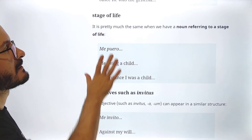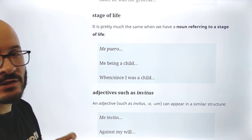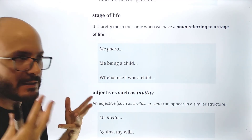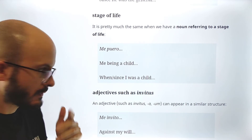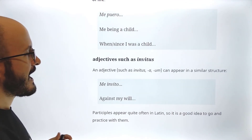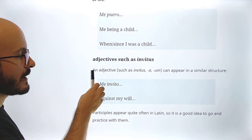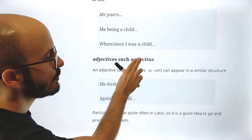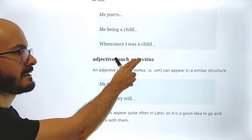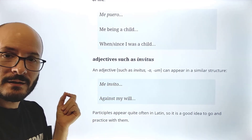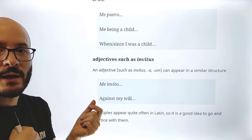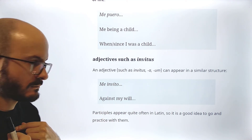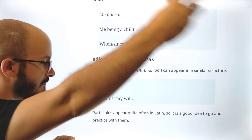We can also have something similar when there is a noun referring to a stage of life. For example, 'me puero' — 'me being a child,' that is 'when I was a child' or 'since I was a child,' depending on context. Then, adjectives such as 'invitus, invita, invitum' can appear in a similar structure. 'Invitus' relates to English 'will' — it means 'against one's will.' So 'me invito' means 'against my will,' and depending on the person it will be against whosoever's will.